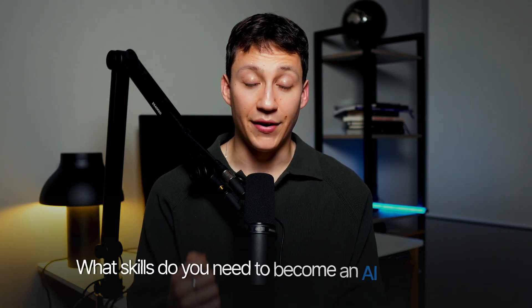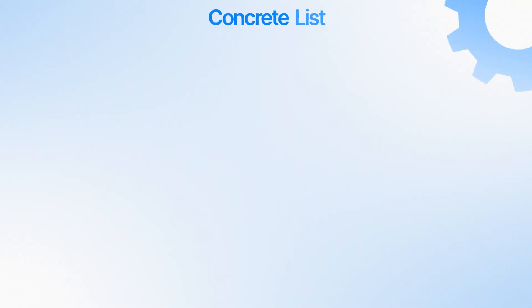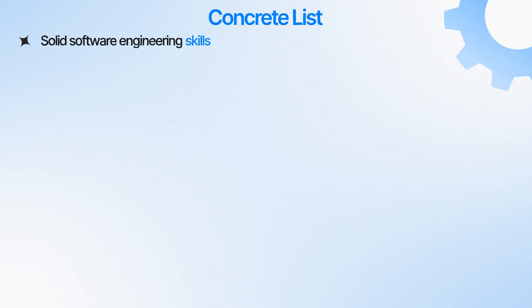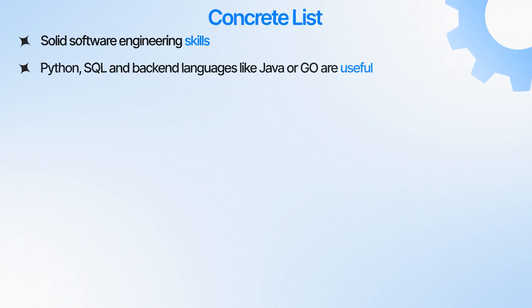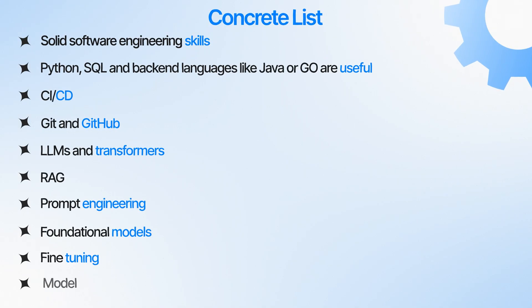So what skills do you need to become an AI engineer? This role is evolving very quickly and requirements change pretty much every quarter. You need to stay current with the latest developments in LLMs, neural networks, and how the AI industry is moving. Concretely, you need solid software engineering skills, Python, SQL, and back-end languages like Java or Go, CI/CD, Git and GitHub, LLMs and Transformers, RAG, prompt engineering, foundational models, fine-tuning, and the Model Context Protocol. It's essentially fundamental software engineering skills plus extra knowledge about GenAI and LLMs.